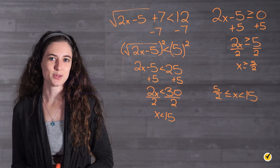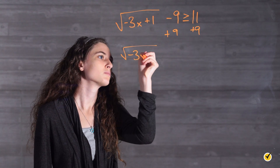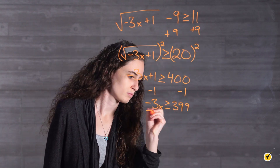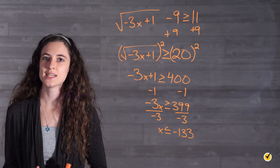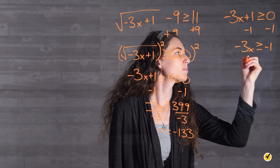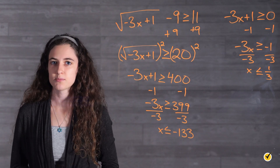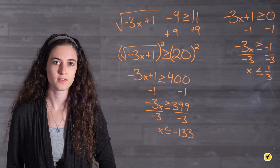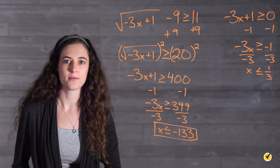Let's try one more example together. Solve for x normally, then solve so what is under the radical is not negative. Since the signs are in the same direction, we choose the more restrictive case as our final answer: x is less than or equal to negative 133.